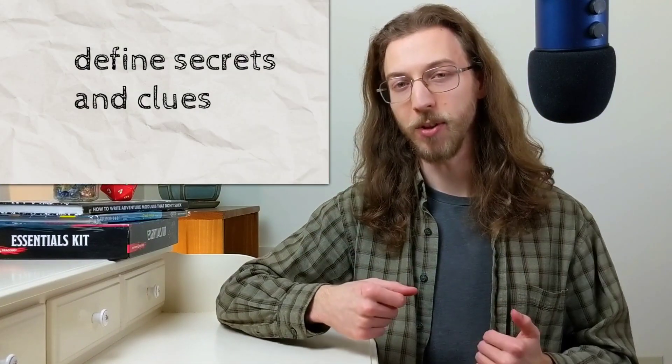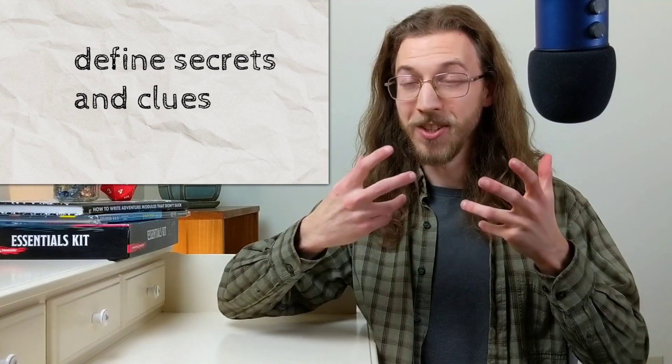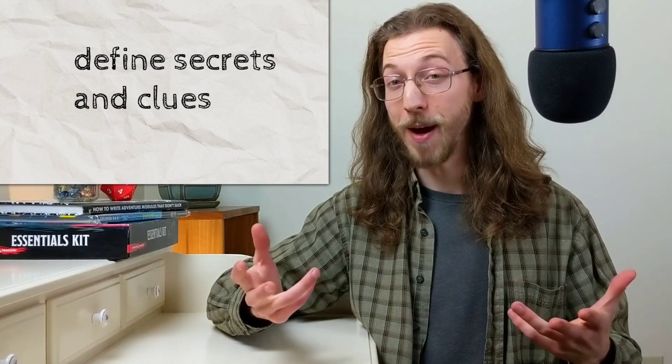The next most important thing, which Mike Shea does weigh heavily on in this book, is defining those secrets and clues! Coming up with mysterious things either happening in the background, or really just anything the characters don't know about that they might discover in this session! You're not planning for how they come across this information, just putting it on the page, reminding you that it's there, so if they do anything that might lead them to it, you can link them to that information!